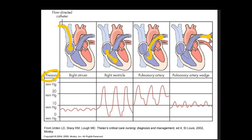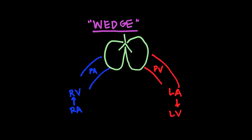Let's take a look at these pressures — they're quite different as we move along. The right atrium has a lower pressure. The right ventricle has a systolic and a diastolic pressure. The pulmonary artery also has a systolic and diastolic component, and then you have the wedge.